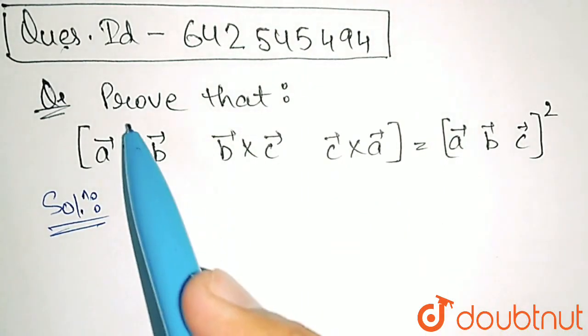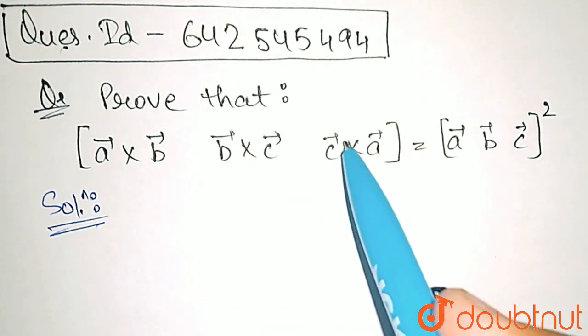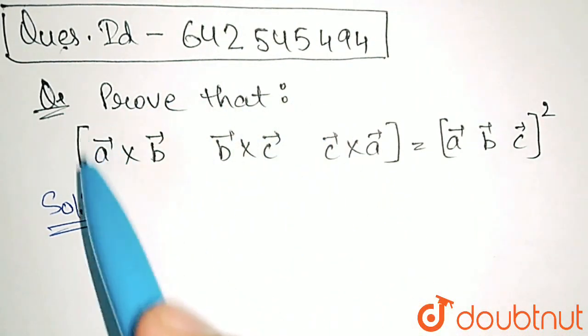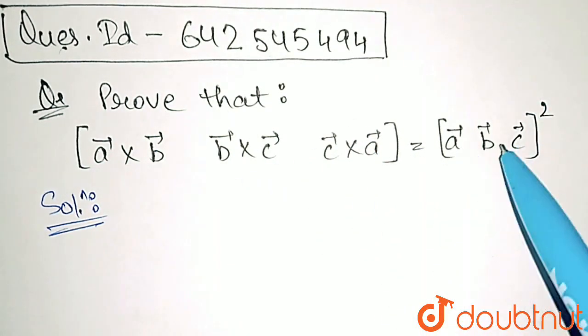In this question, we need to prove that A cross B, B cross C and C cross A - these three vectors have scalar triple product equal to the scalar triple product squared of A, B and C.